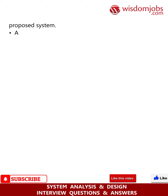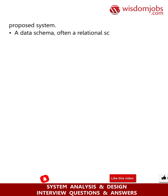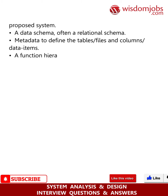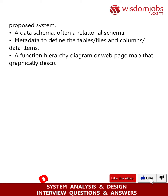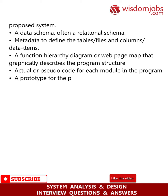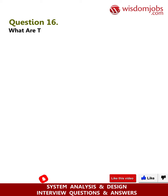Outputs for system design include: infrastructure and organizational changes for the proposed system; a data schema, often a relational schema; metadata to define tables, documents/files, and columns/data items; a function hierarchy diagram or web page map that graphically describes the program structure; actual or pseudo code for each module in the program; and a prototype for the proposed system.